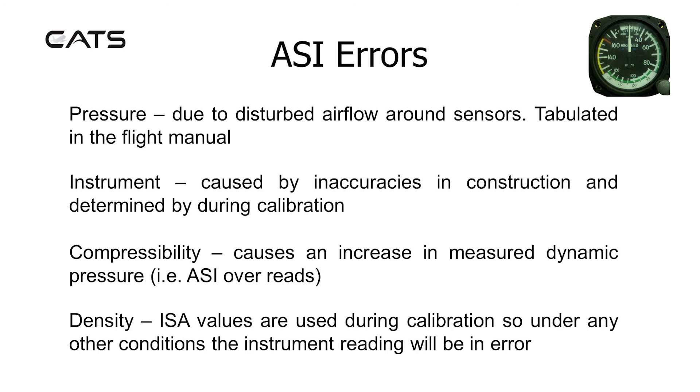ASI errors. Like all pressure instruments, it suffers from pressure and instrument error. Pressure errors are due to disturbed airflow around the sensors and typically tabulated in the flight manual. Instrument error is caused by inaccuracies in construction and determined during calibration. Compressibility causes an increase in measured dynamic pressure, i.e. the ASI over-reads.